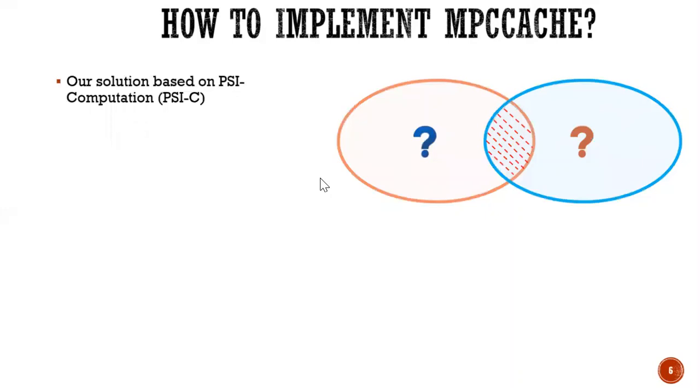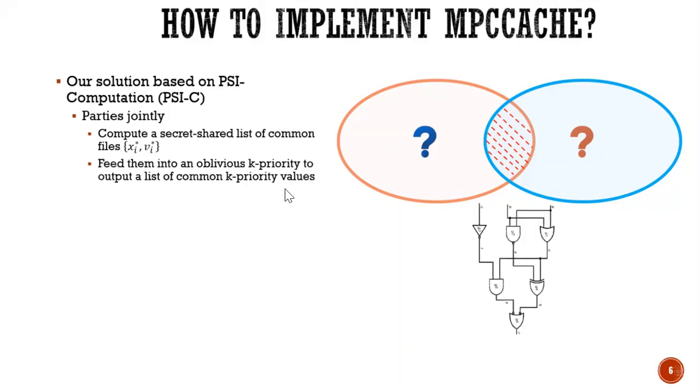So we really want to implement MPC cache without any leakage. So our solution is based on PSI computations. We call it PSIC or sometimes people say circuit PSI. So the functionality of PSIC gives our parties a common item under a secret shared form. So therefore the parties can feed the shares into the next steps.